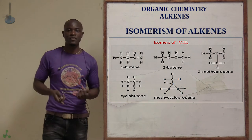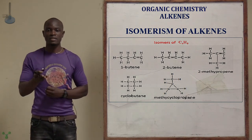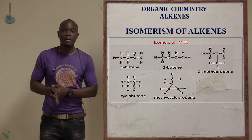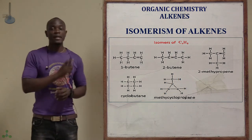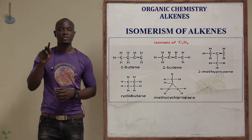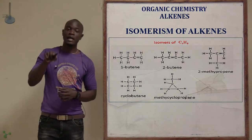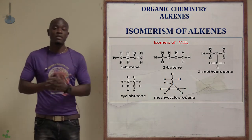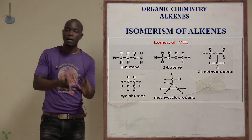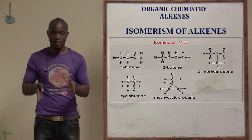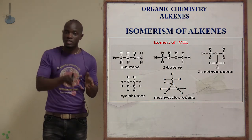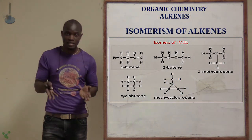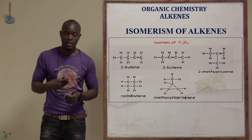Let's look at some examples. Take butene — applying the alkene formula CnH2n with n=4, we get C4H8: four carbons and eight hydrogens. That is the molecular formula for butene, but the structural formula will be different.